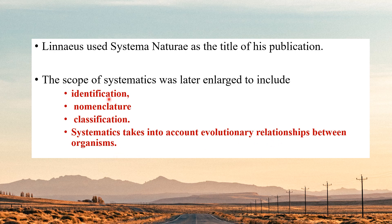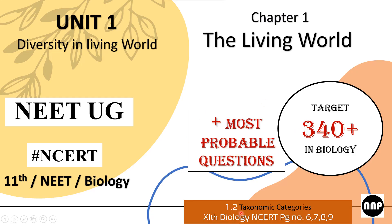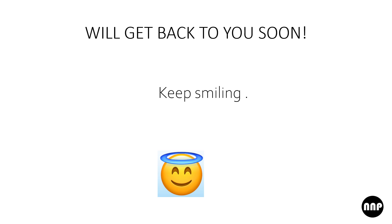The scope of systematics was later enlarged to include identification, nomenclature, classification, and also the evolutionary relationships between organisms. So this was 1.1 of this chapter. In the next video we'll talk about 1.2 — the next and final part of this chapter. If you have any suggestions or difficulty understanding any topic in this video, you can comment below. Your suggestions are welcome — we'll get back to you soon. Keep smiling.